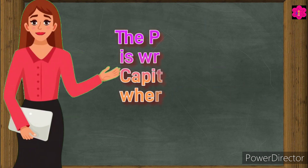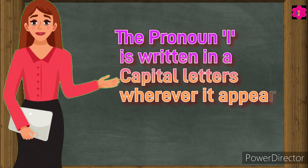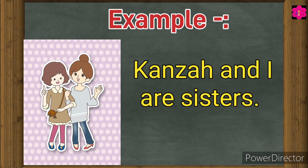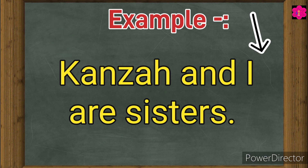The pronoun I is written in a capital letter wherever it appears. Another example: Kanza and I are sisters. Here the word Kanza is a noun as it is a name of a person, and I is a pronoun, and both are in the capital letter.